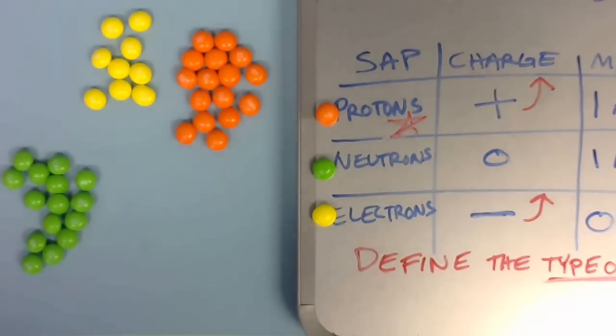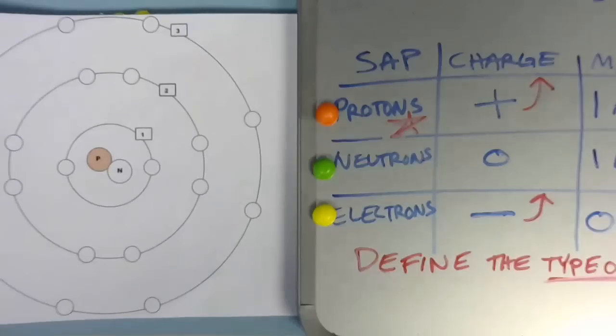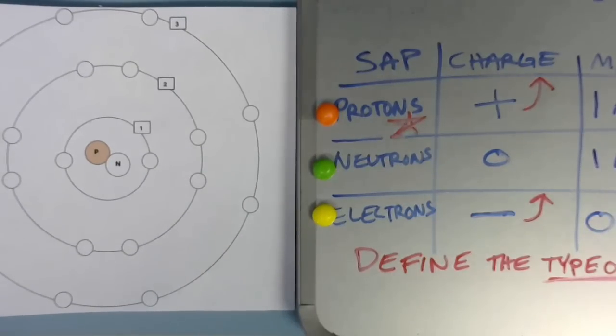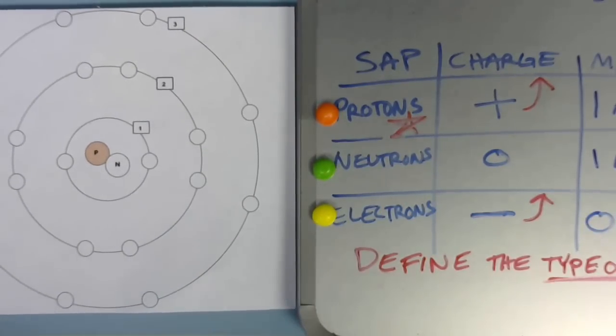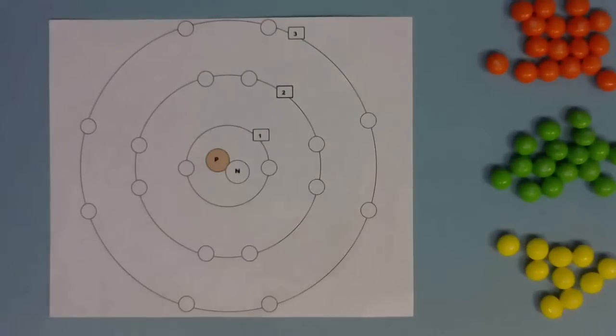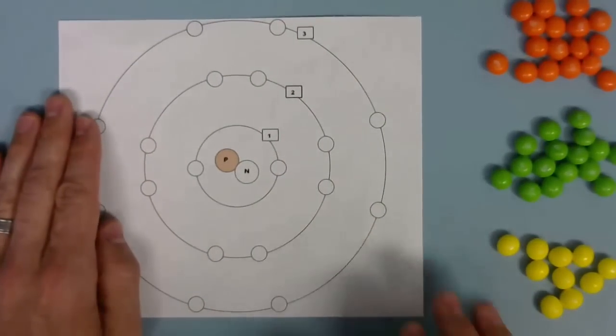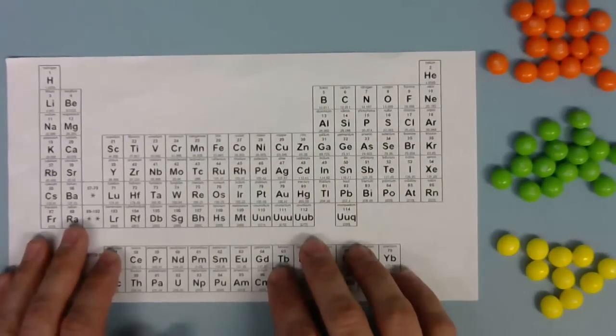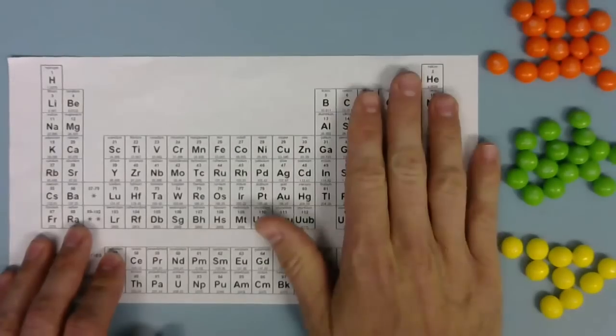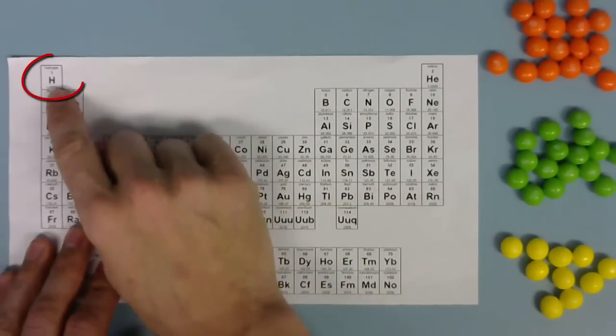We're now going to get into diagramming different types of atoms, or elements. Before we get into making diagrams of our atoms, what we're going to have to do is take a closer look at the periodic table of elements. We're going to start by looking at our first element, hydrogen.